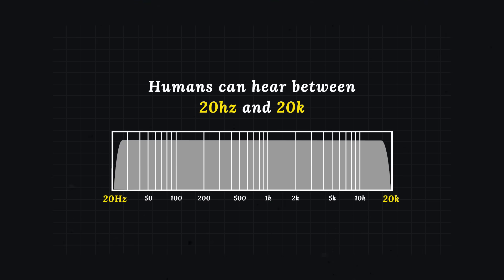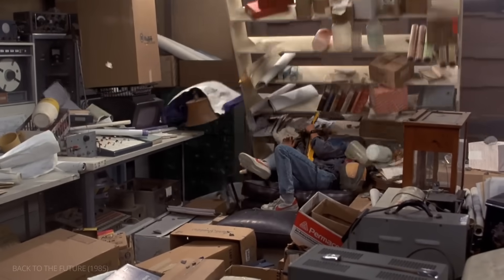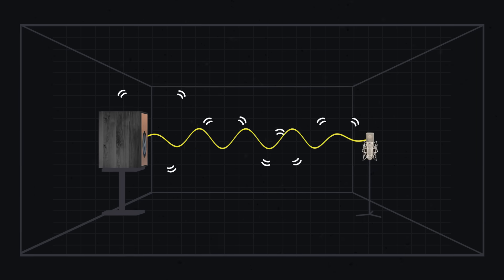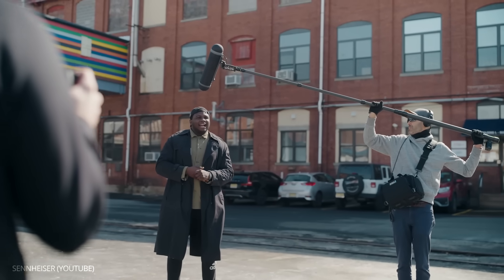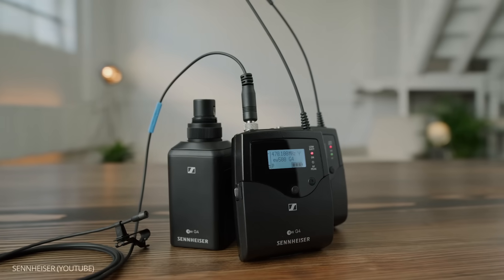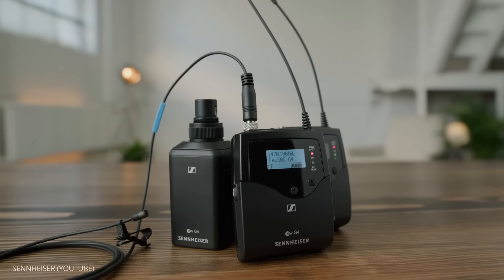Humans can hear between 20 hertz and 20 kilohertz. To record sound, we use microphones — transducers that convert sound waves into an electrical signal. Different kinds of microphones use different methods to create the signal, which we'll cover in a moment.